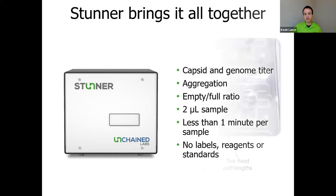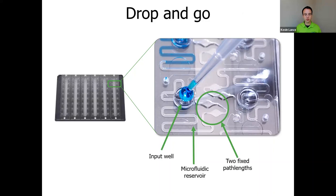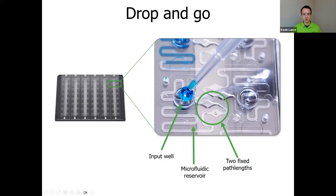Let's take a look at how this is done. Stunner operates using a Stunner plate, which follows a normal 8×12, 96-well plate SBS format. But instead of having an open cylinder, each one of those wells is a microfluidic circuit. That's where we take advantage of the two-microliter sample volume — we pipette our two-microliter sample into the input well. At the bottom of the input well is a tiny hole that allows the sample to be drawn into the serpentine microfluidic reservoir, where it hangs out until it's analyzed inside chambers that have two fixed path lengths: 0.1 mm and 0.7 mm.